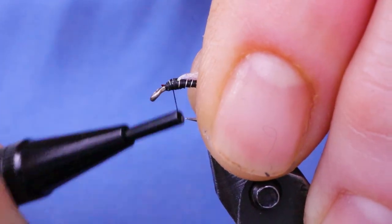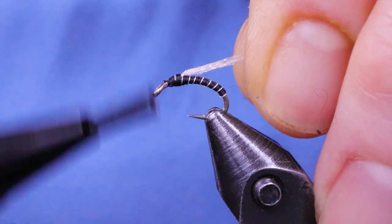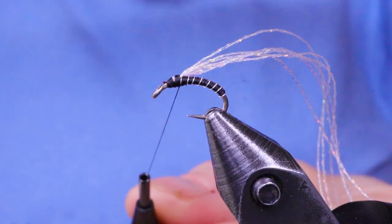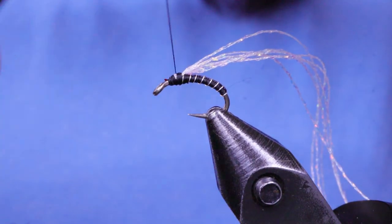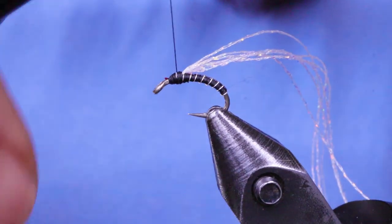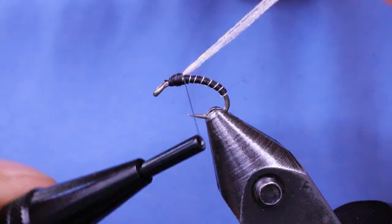I'm just going to place it right on top, make a few wraps over it. See how it's sliding down. And it will do that. I'm going to wax my thread again. It's just a little tiny piece I want to make sure it goes over top of, even though the dubbing is going to cover that up anyway.